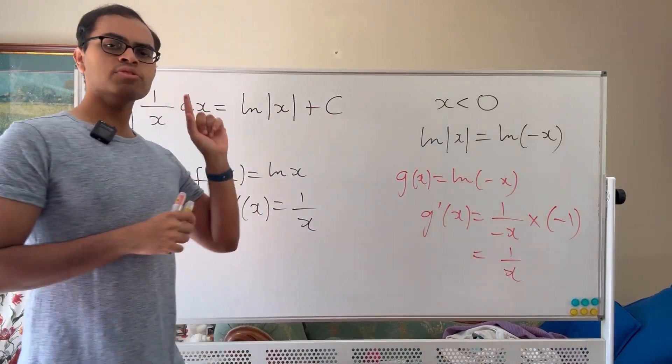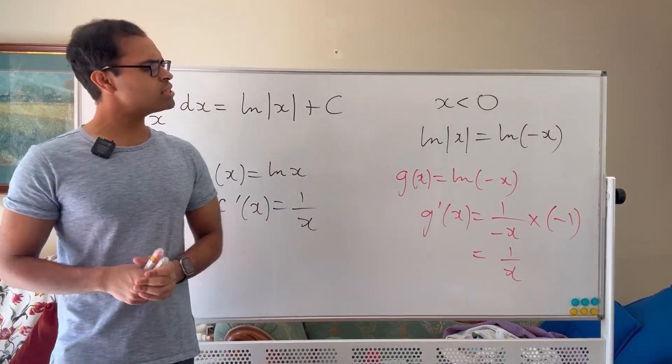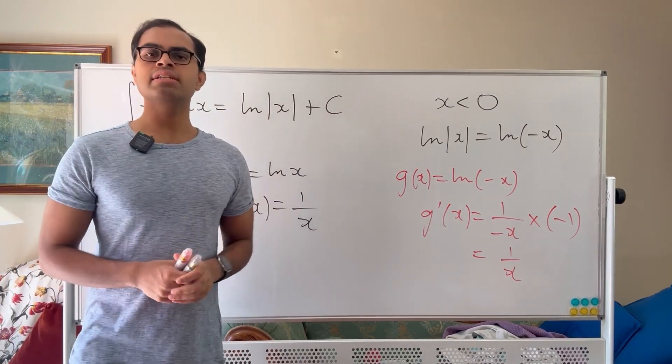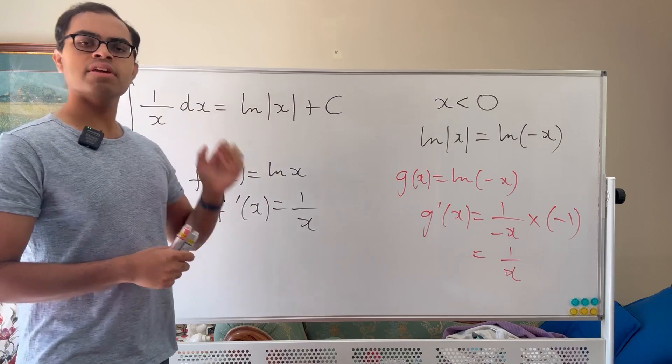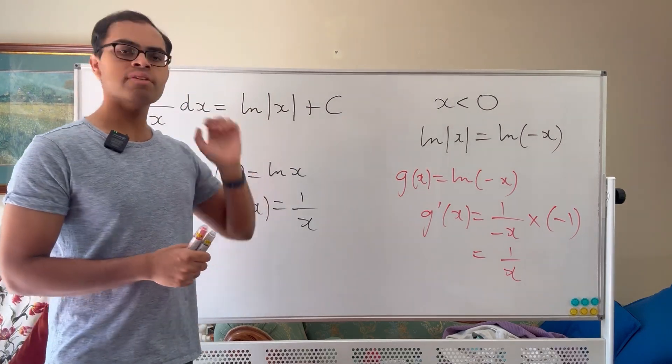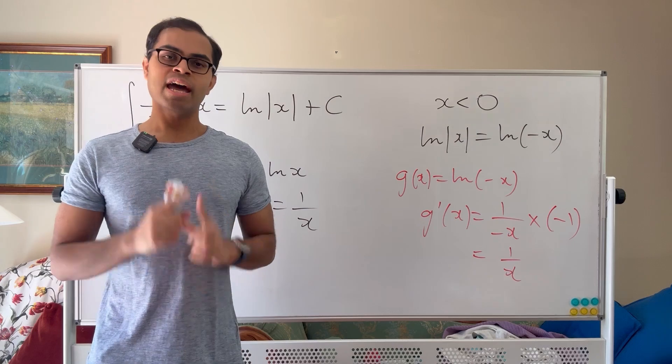So far so good, but of course we have to add the constant right? Whenever we take an integral we have to take the plus a constant. So why is that? Well if you add a constant and you differentiate the function log of absolute value x, you'll just get the derivative of log of absolute value x because the derivative of a constant is zero.